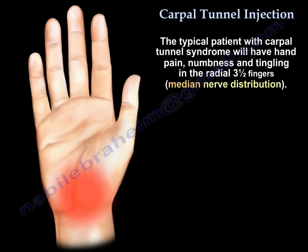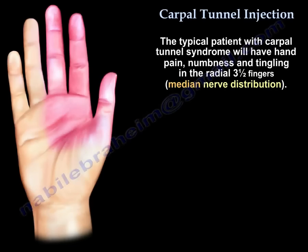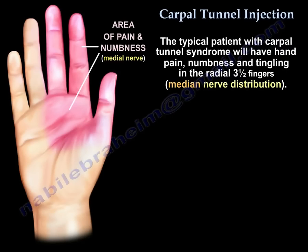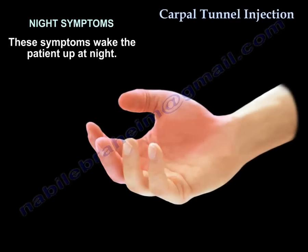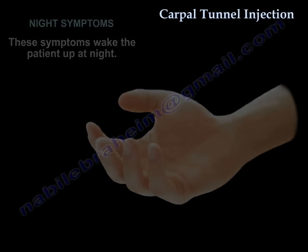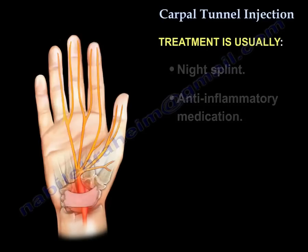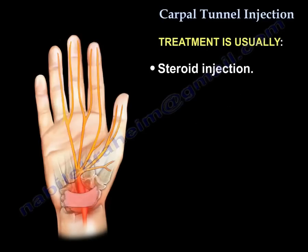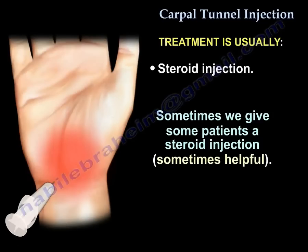The typical patient with carpal tunnel will have hand pain, numbness, and tingling in the radial three-and-a-half fingers. These symptoms may wake the patient up at night. We usually give the patient a night splint and anti-inflammatory medication. Sometimes we give some patients a steroid injection, and sometimes that's helpful.